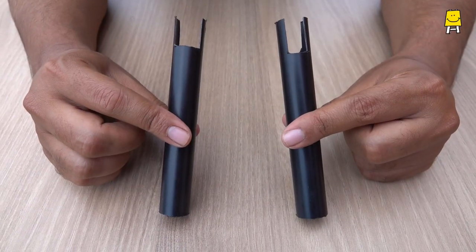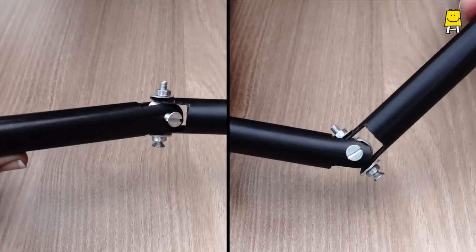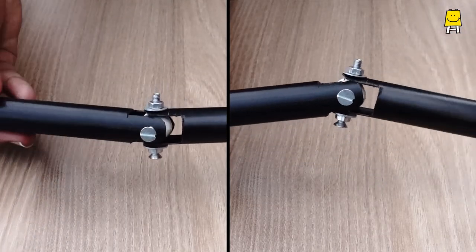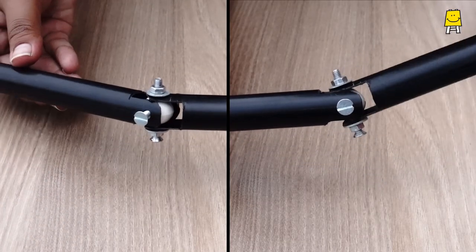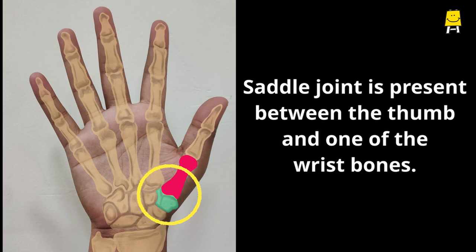A saddle joint has both bones shaped like a saddle where one bone moves in the cavity of the other. This joint is present between the thumb and one of the wrist bones.